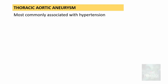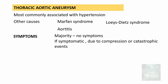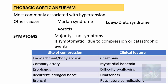Thoracic aortic aneurysms are most commonly associated with hypertension. Other causes include Marfan syndrome, Loeys-Dietz syndrome, and aortitis. The majority of cases are asymptomatic; when symptomatic, that is because of compression or secondary catastrophic events. Manifestations depend on the site of compression: bone erosion causes chest pain; coronary vessel compression causes myocardial ischemia; esophageal compression causes difficulty swallowing; recurrent laryngeal nerve compression causes hoarseness of voice; and bronchial compression leads to respiratory complications.